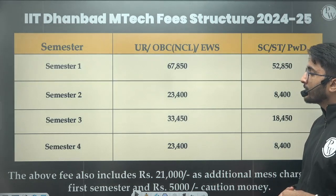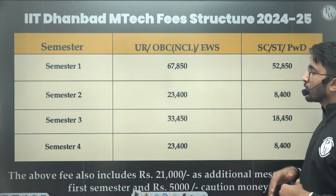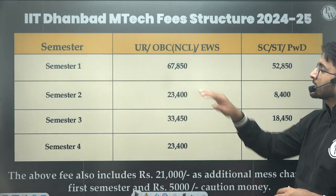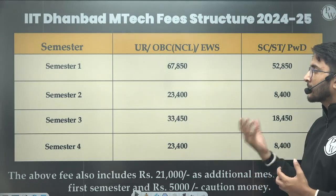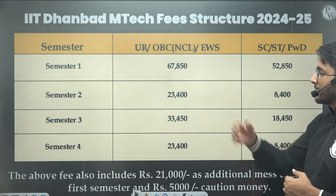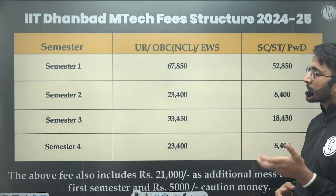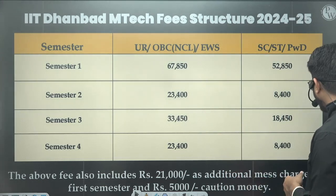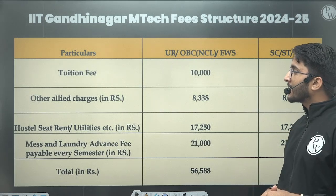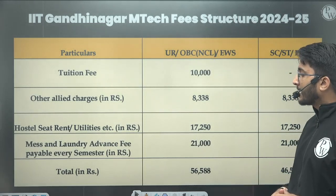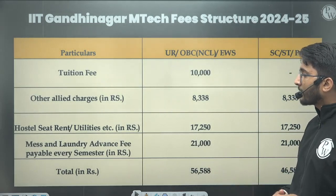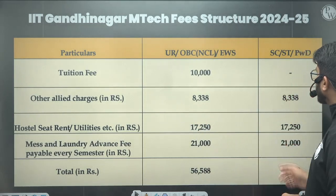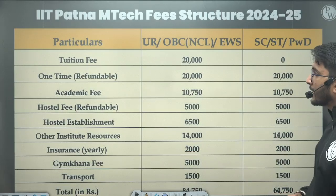For IIT (ISM) Dhanbad, the fees are available semester-wise — Semester 1, 2, 3, and 4. In Semester 1, some amount is refundable, so you need to pay higher initially; after that the fees is less. For IIT Gandhinagar, the total amount is ₹56,588, which includes hostel charges, and ₹46,588 for SC, ST, and PWD.